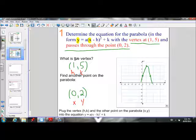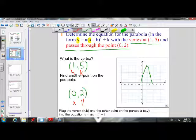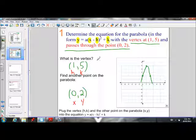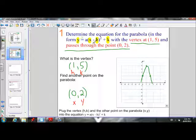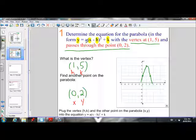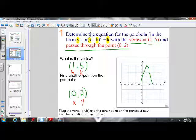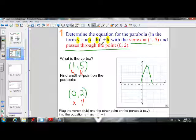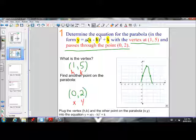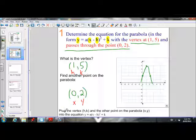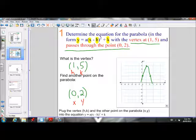So what we have now: we have values for h and k, and x and y. The only value we don't know is a. So in order to write the equation of this parabola, we need to figure out the value of a. The way we can do that is sub in our h, k, x and y values in for those corresponding variables into the vertex form equation, and then we can solve for a. Once we've solved for a, we can write the equation. So the third step would be to plug the vertex and the other point into the equation y equals a(x minus h) squared plus k. So let's go ahead and do that.